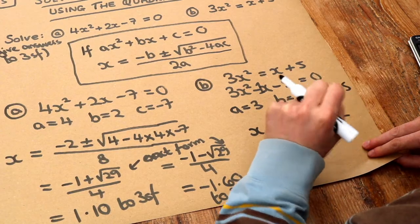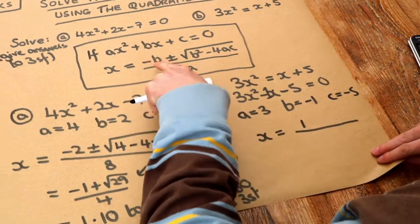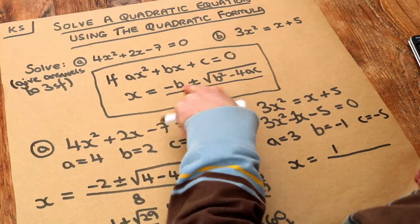So that's a common error that students make. They forget that if you have minus b where b is already negative it becomes positive.